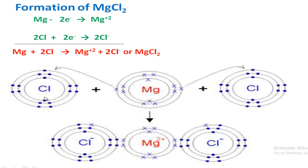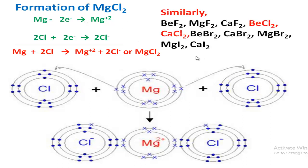In the diagram: chlorine's outermost shell has seven electrons and magnesium's outermost shell has two electrons. One of these two electrons is released to one chlorine atom and the other is released to the second chlorine atom. Both chlorine atoms convert into chloride ions and magnesium is converted into magnesium ion. In this way, magnesium chloride molecule is formed.